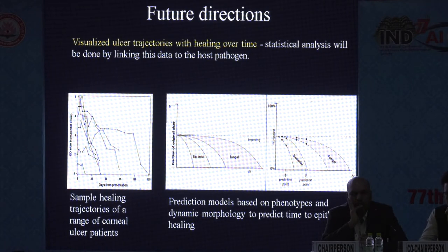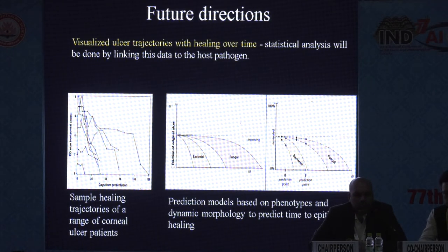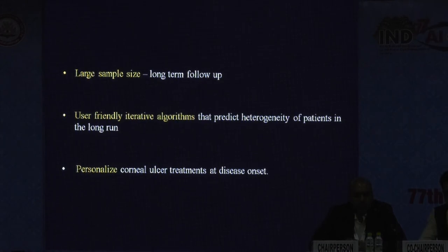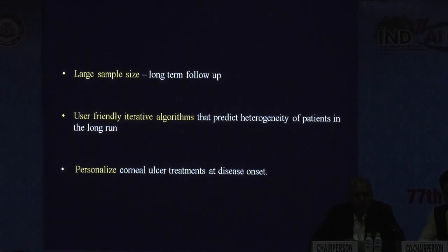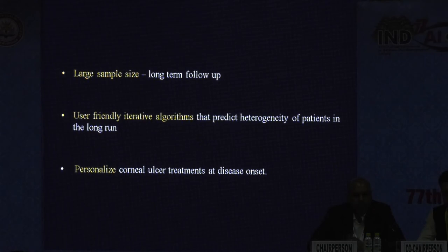In future, we aim to create visualized ulcer trajectories with healing over time, and statistical analysis will be done by linking this data to the host pathogen. For this, we need a large sample size and long-term follow-up. We aim to create user-friendly algorithms that predict heterogeneity of patients in the long run and personalize corneal ulcer treatments at disease onset.